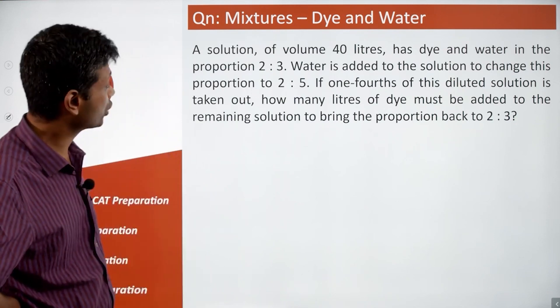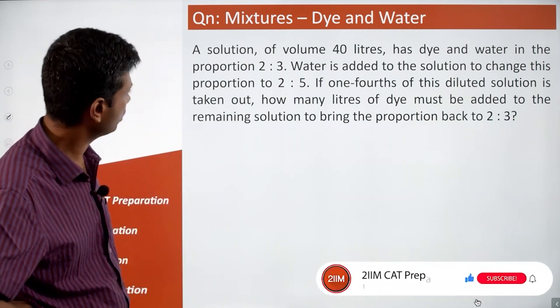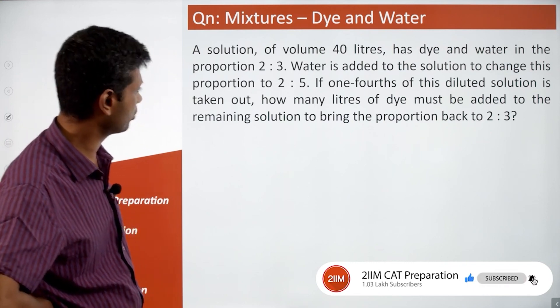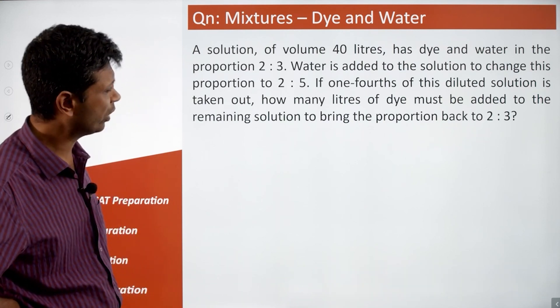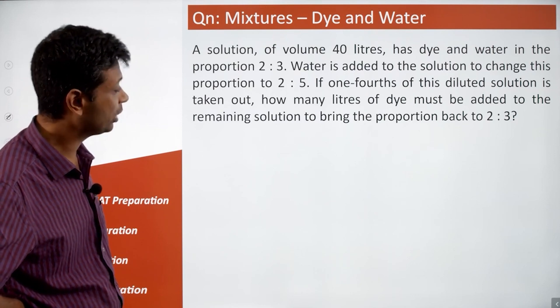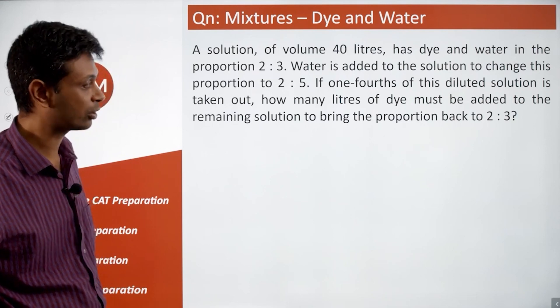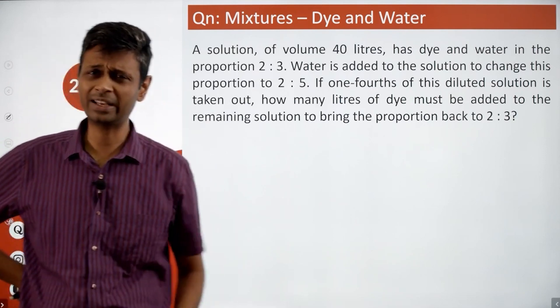Wonderful, let's do this one. A solution of volume 40 liters has dye and water in the proportion 2 is to 3. Water is added to the solution to change this proportion to 2 is to 5. If one-fourth of this diluted solution is taken out, how many liters of dye must be added to the remaining solution to bring the proportion back to 2 is to 3? It looks like there's lots of data here, but it's a sitter.